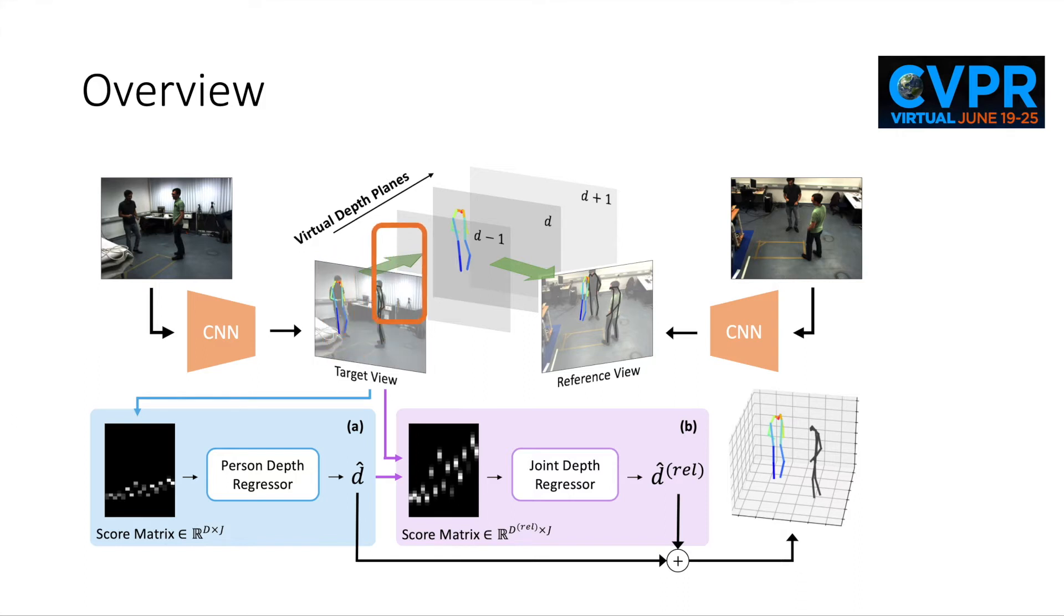Specifically, each candidate 2D pose is back projected to successive depth planes, and a cross-view consistency with 2D pose in reference views is measured to form a score matrix which facilitates accurate depth regression. We adopt a coarse-to-fine paradigm to regress the person-level depth first and the joint-level depth subsequently. 3D poses can then be obtained via back projection with the estimated depth.